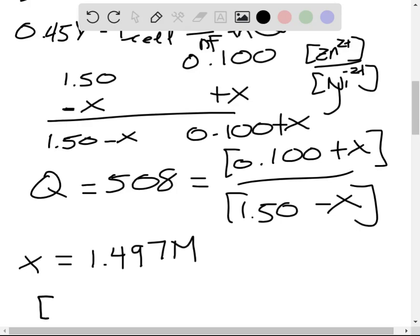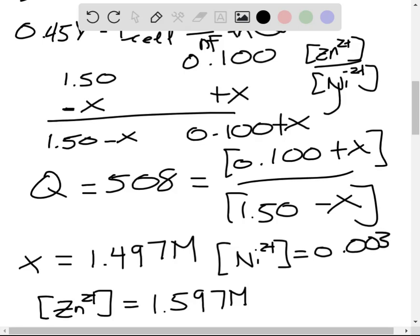So that means the concentration of our zinc would be equivalent to 0.1 plus that quantity, which would be about 1.597 molars. While the concentration of our nickel would be equivalent to about 0.003 molars. And this gives our final answers.